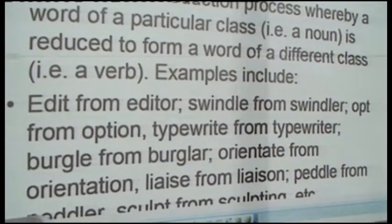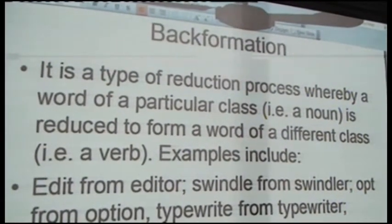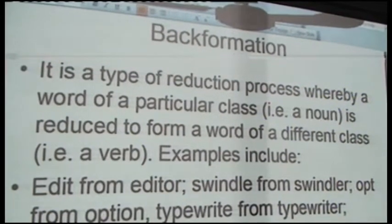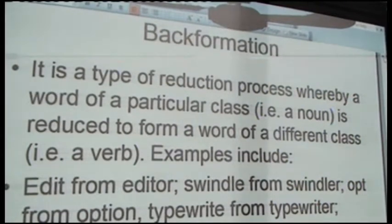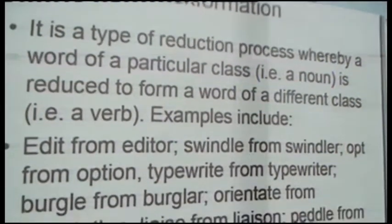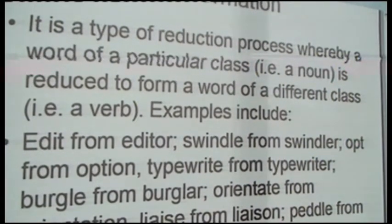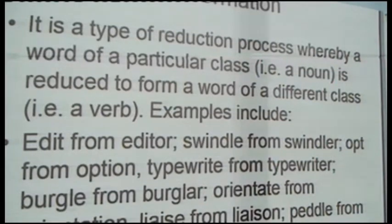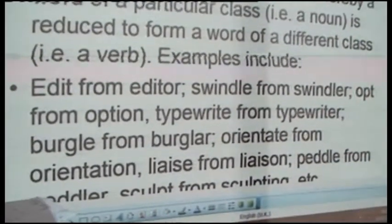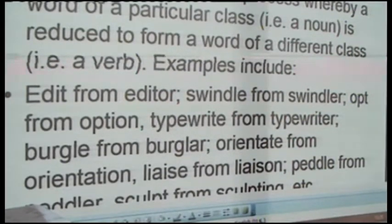We move on to back formation, which is a type of reduction process in which a word of a particular class is reduced to form a word of another class. The original word is of one class, and when it is reduced, it changes to a word of a different class. For example, 'edit' is formed from 'editor' — 'editor' (a noun) was the first word formed, which was then reduced to 'edit' (a verb). Similarly, 'swindle' from 'swindler,' 'opt' from 'option,' 'typewrite' from 'typewriter,' 'orientate' from 'orientation,' 'peddle' from 'peddler.'